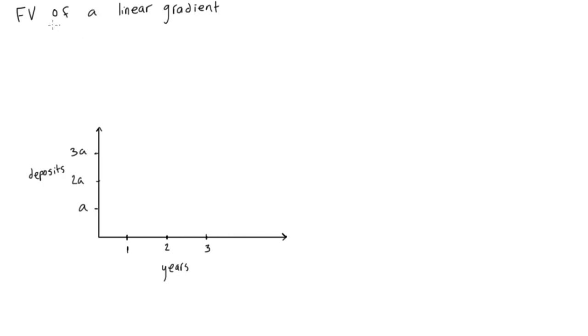So the formula for future value of a linear gradient is FV equals a over i times 1 plus i to the power of n minus 1, all over i, and then we have minus n.